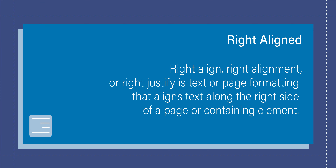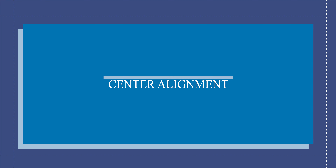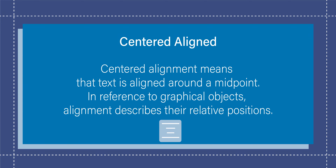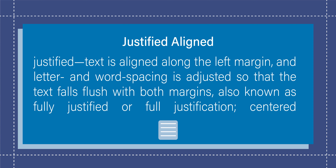Right alignment is when the elements are aligned to the right side of the page. Center alignment is when the elements are aligned with the center of the page. Justified alignment is when the elements are anchored evenly between the left and the right side of the page.